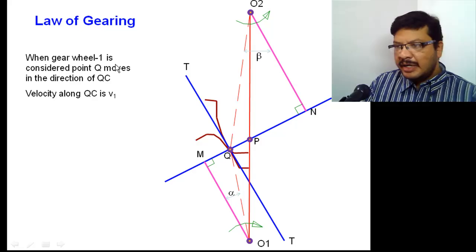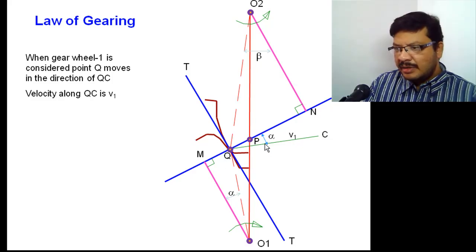When gear wheel 1 is considered, this point Q moves in a direction perpendicular to O1Q. The velocity along Q is V1. The angle made by Q with respect to common normal MN is alpha. As O1M and O1Q are mutually perpendicular to this QC and MN, the angle made by these two lines is equal to angle made by these two lines.